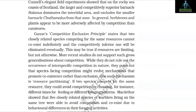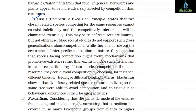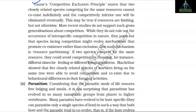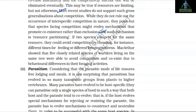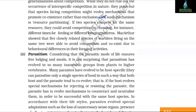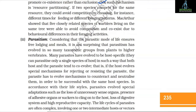In general, herbivores and plants appear to be more adversely affected by competition than carnivores. Gause's competitive exclusion principle states that two closely related species competing for the same resources cannot coexist indefinitely and the competitively inferior one will be eliminated eventually. This may be true if resources are limiting but not otherwise. More recent studies point out that species facing competition might evolve mechanisms that promote coexistence rather than exclusion. One such mechanism is resource partitioning — if two species compete for the same resource, they could avoid competition by choosing, for instance, different times for feeding or different foraging patterns. MacArthur showed that five closely related species of warblers living on the same tree avoided competition and coexisted due to behavioral differences in their foraging activities.